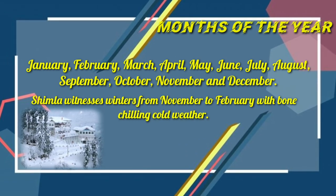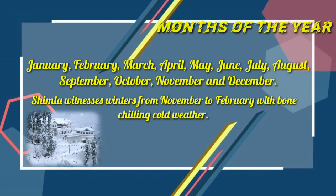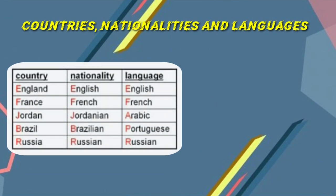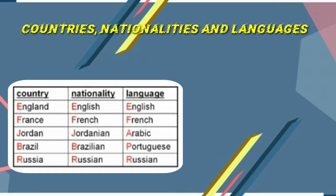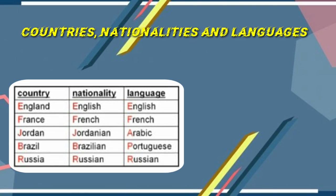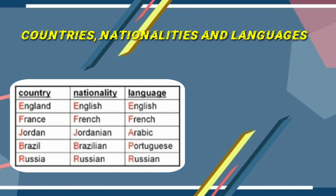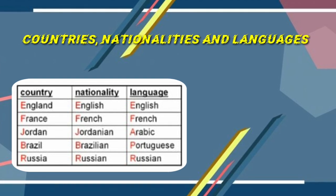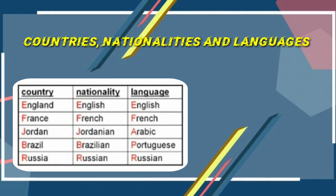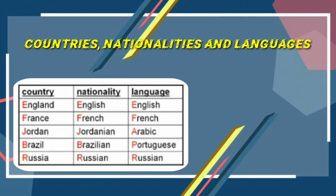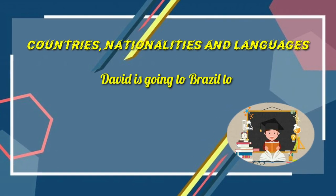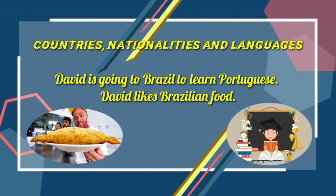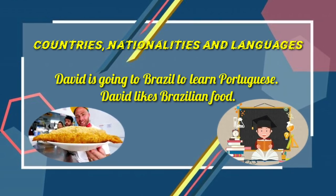Countries, nationalities, and languages — the first letter of all countries, nationalities, and languages is a capital letter. For example: England — nationality English, language English; France — French; India — Hindi; Brazil — Brazilian, language Portuguese. Example: 'David is going to Brazil to learn Portuguese. David likes Brazilian food.' We have three capital letters: Brazil, Portuguese, and Brazilian.